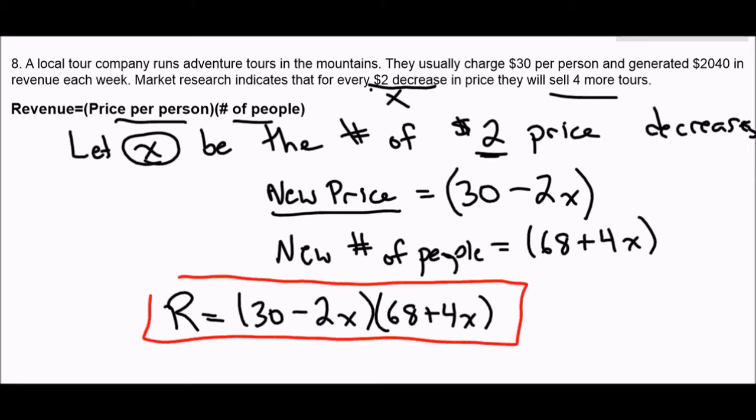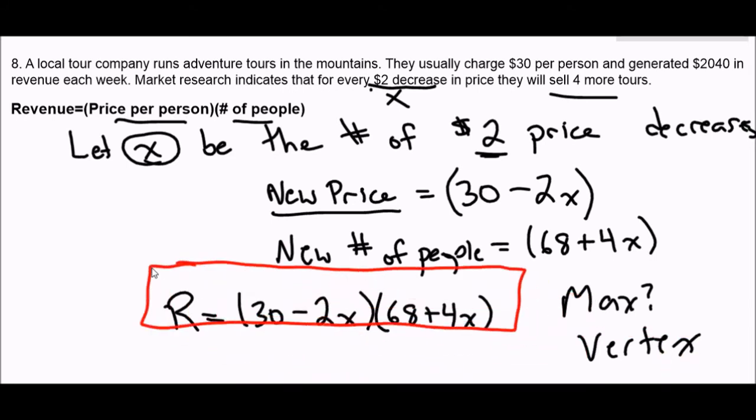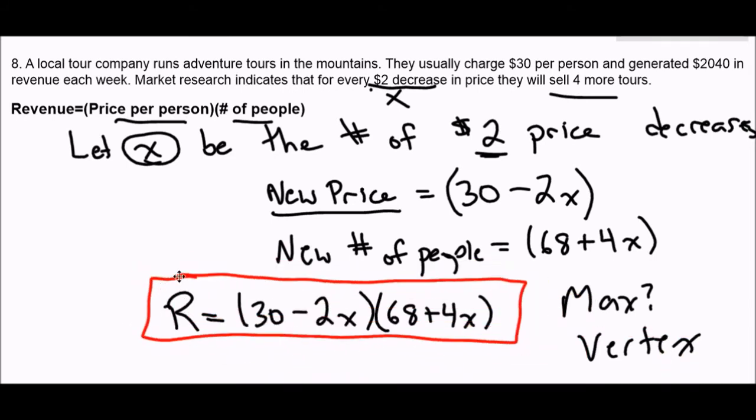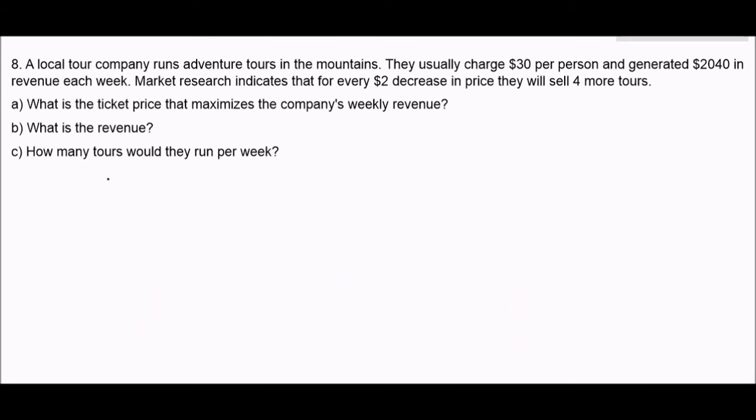If I were to multiply this out and do FOIL, you'd see that eventually I would have negative 2X times 4X, and that would give me negative 8X squared, and so clearly it's a quadratic. Because it's a quadratic, I know that to find the maximum means find the vertex. Let's take our equation revenue: R = (30 - 2X)(68 + 4X). Think of this as just an equation. If you want, think of there being a Y here instead of an R. We want to find the maximum. We want to find the vertex.